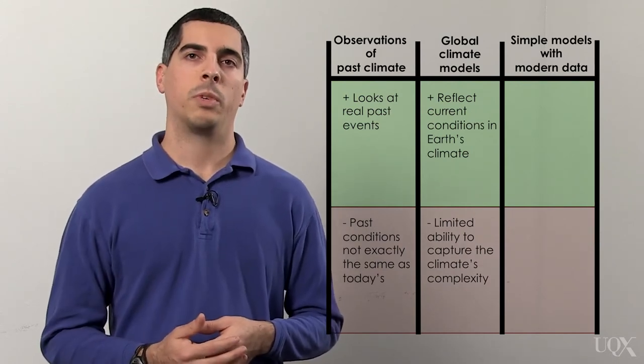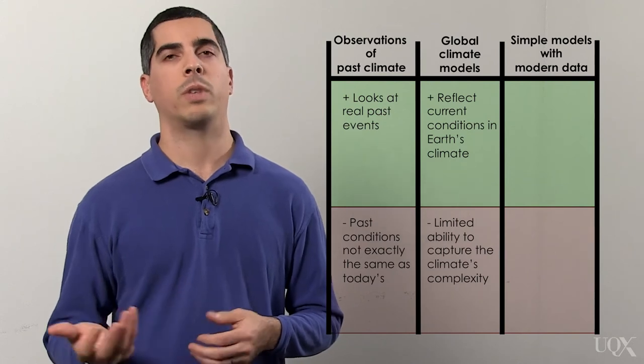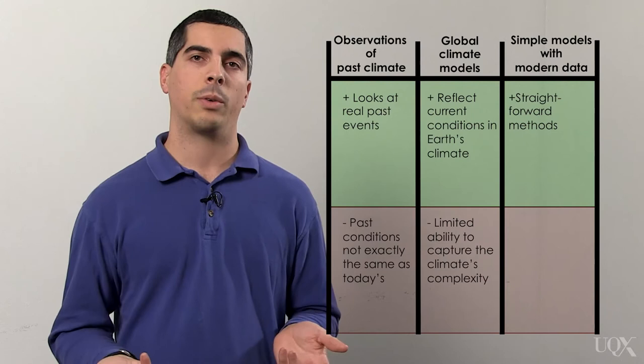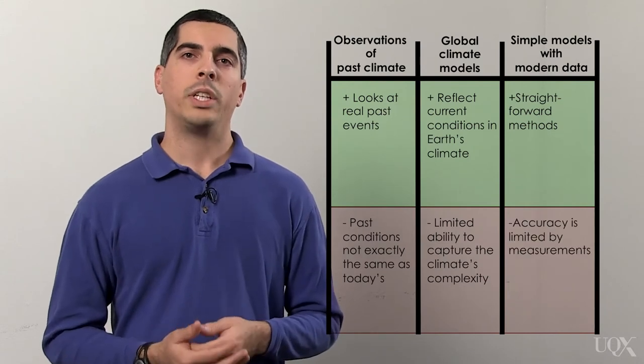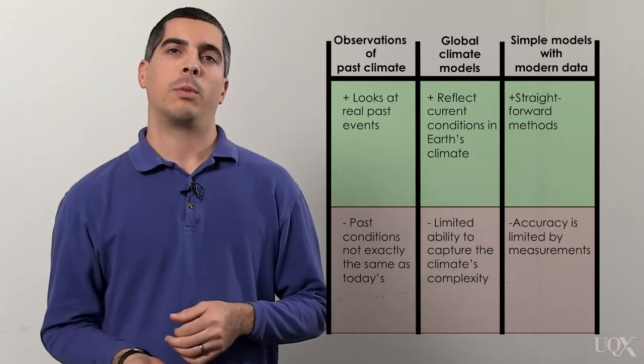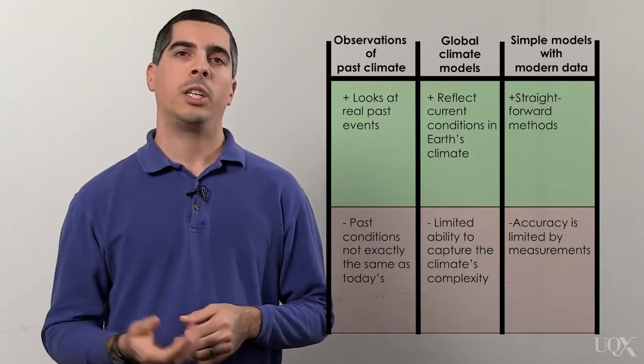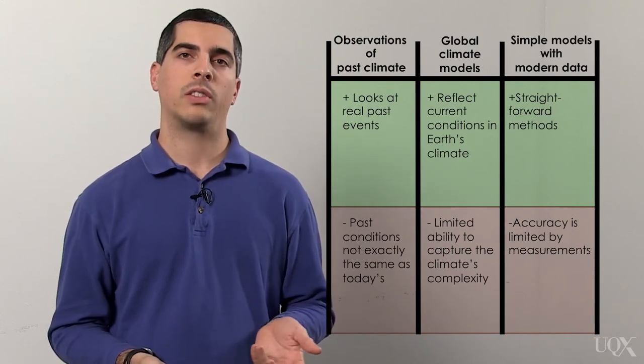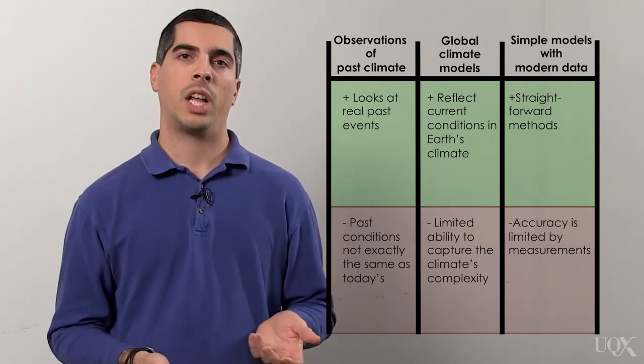The strength of using modern measurements with simple models is that they're relatively straightforward. We don't need to understand all the intricacies of the Earth's climate that way. One weakness is that this approach relies on the accuracy of our recent climate measurements. For example, if we've underestimated the amount of heat going into the oceans or overestimated the size of the global energy imbalance, this method will underestimate the climate sensitivity.